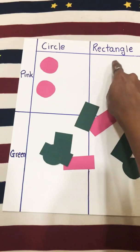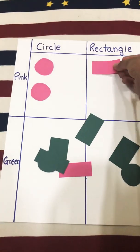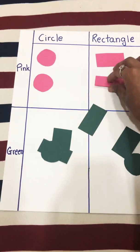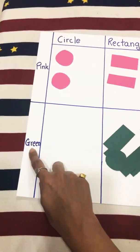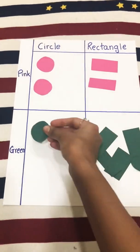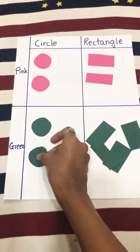Next, we need pink rectangles. I can see two here, which I am going to lay out like this. Next, the column asks for green circles. Let us find them. Do we have any more? No.